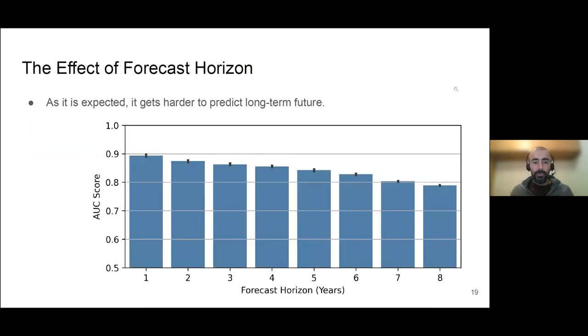Another experiment was on different horizons. So the default horizon that this competition started on was three years. So if you use a smaller horizon, like two years or one year, obviously you're going to have better AUC. And the longer the horizon, the more difficult to predict the future. Here I have a horizon of eight years.